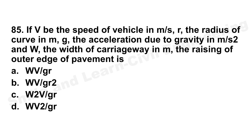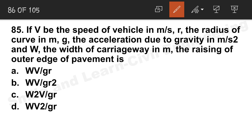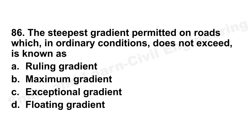Question 85: If V is the speed of vehicles in m/s, R the radius of curve in m, g the acceleration due to gravity in m/s², and W the width of carriageway in m, then the raising of the outer edge of the pavement (super elevation) is WV²/gR. Option D is the correct answer.